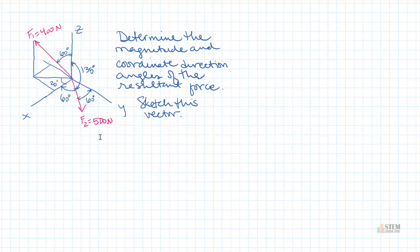We've got two forces: F2 here and F1 right there. What we're going to do is find the resultant. Let's remember what a resultant is — it is the sum of all of the force vectors. Right now I've just got magnitudes, so I need to get an actual force vector for each one. Let's start with F1, get it in vector form, and then do the same for F2.